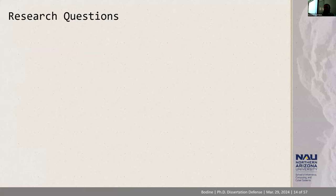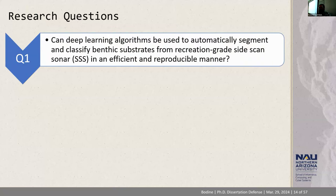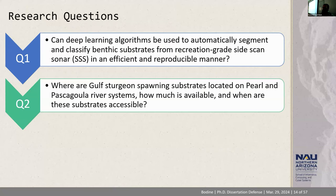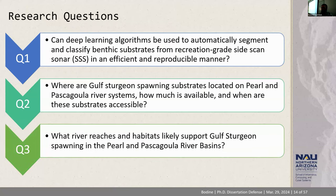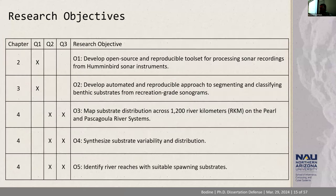This leads me to my research questions. First, can deep learning algorithms be used to automatically segment and classify benthic substrates from recreation-grade side-scan sonars in an efficient and reproducible manner? Second, where are Gulf Sturgeon spawning substrates located on the Pearl and Pascagoula river systems, how much is available, and when are these substrates accessible? Finally, what river reaches and habitats likely support Gulf Sturgeon spawning in the Pearl and Pascagoula river basins? Each of these questions is addressed in a chapter, with question one split across chapters two and three, and the remaining two questions addressed in chapter four.